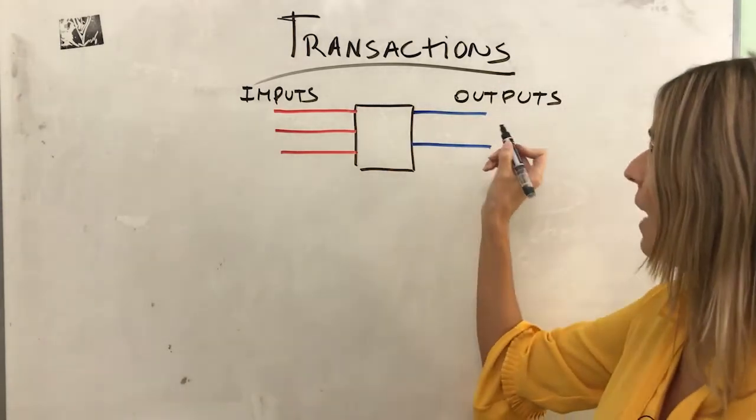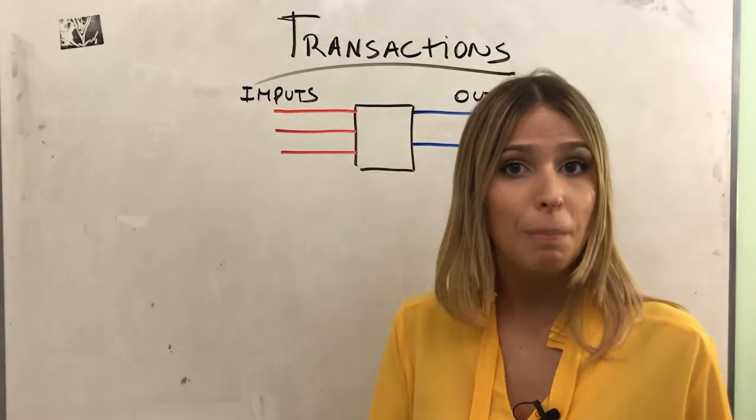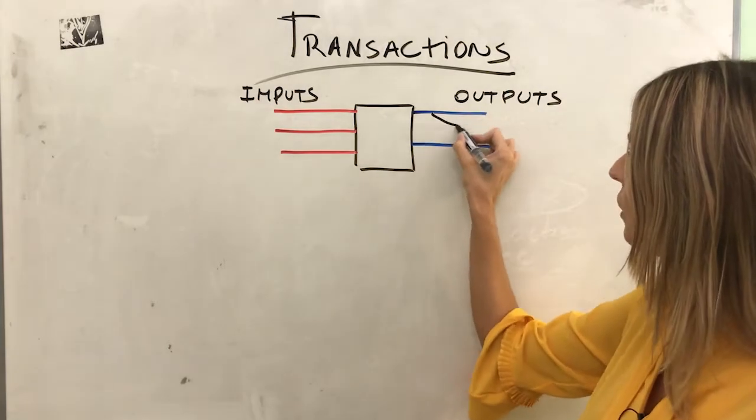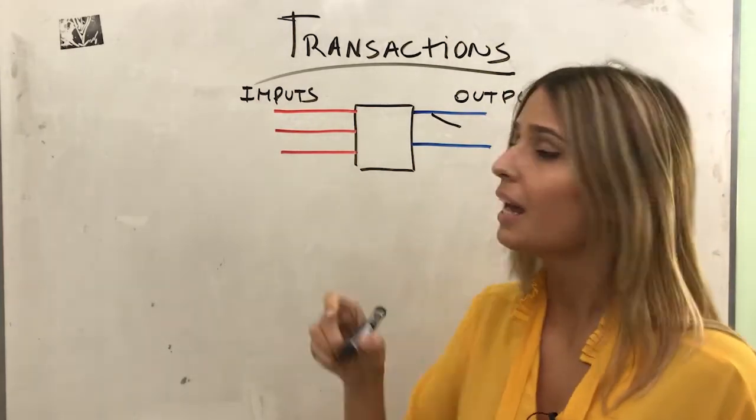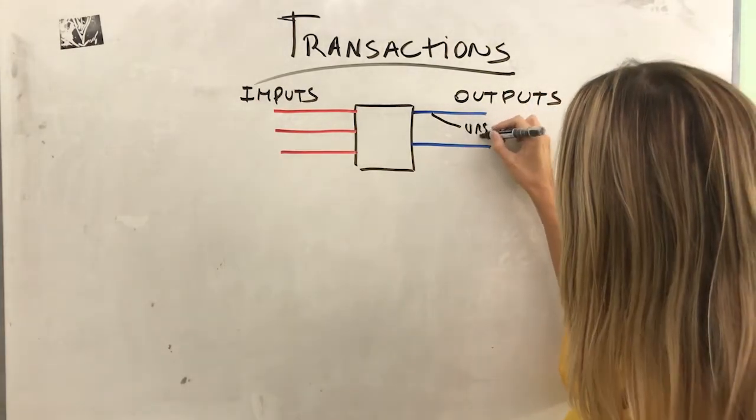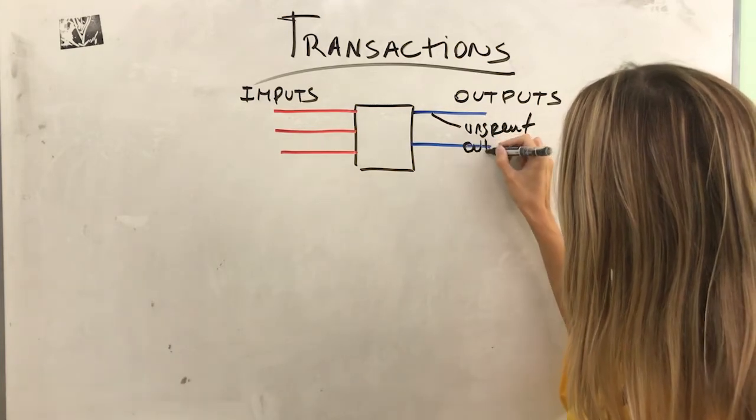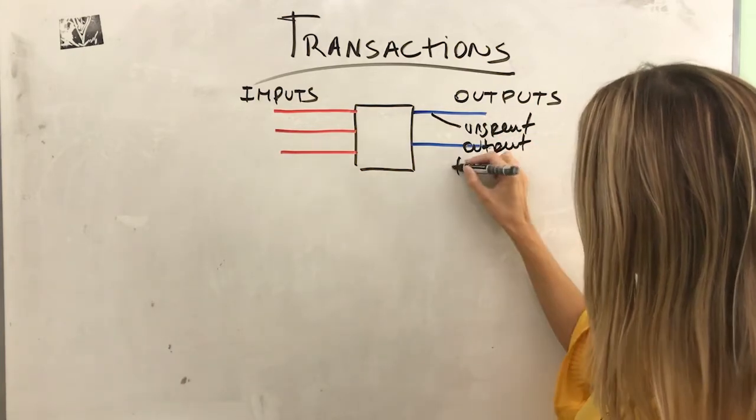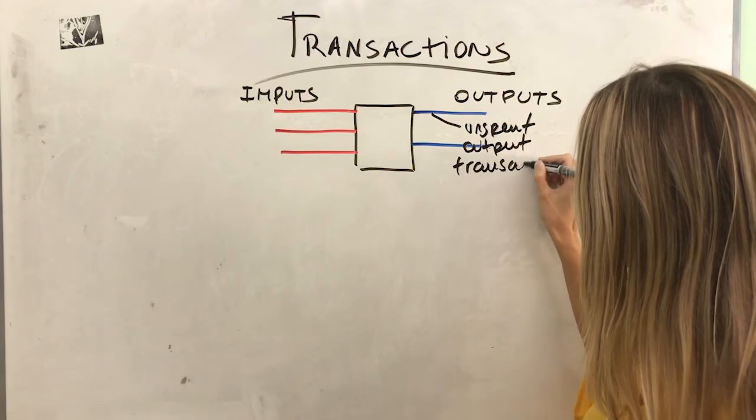And the outputs, until they are spent, are called - what we learned in the previous video, go and check it out - unspent output transactions.